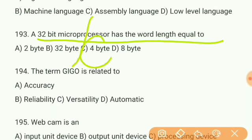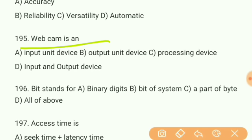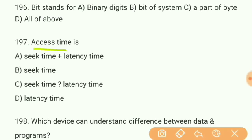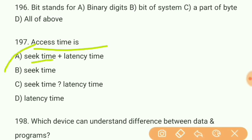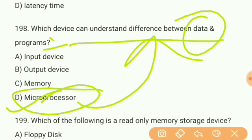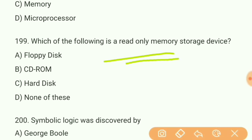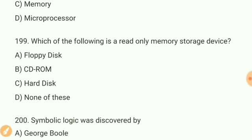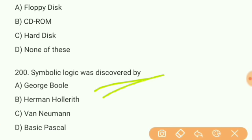Question 193: A 32-bit microprocessor has a word length equal to what? Answer C — 4 bytes. Question 194: The term GIGO is related to what? Answer A — accuracy. Question 195: A webcam is what? Answer — an input device. Question 196: B stands for binary digits. Question 197: Access time is what? Answer A — seek time plus latency time. Question 198: Which device can understand the difference between data and programs? Answer D — microprocessor. Question 199: Which of the following is a read-only memory storage device? Answer B — CD-ROM.